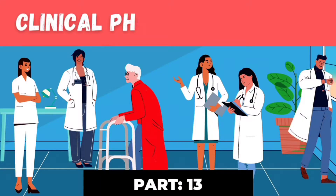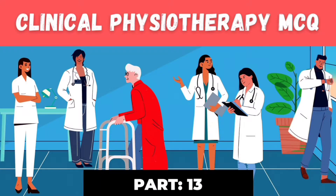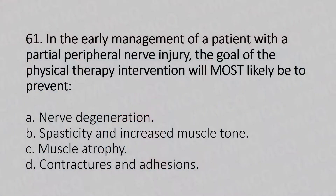Hello, welcome to part 13 of the clinical physiotherapy MCQ series. Let's move to our 61st question. In the early management of a patient with a partial peripheral nerve injury, the goal of the physical therapy intervention will most likely be to: